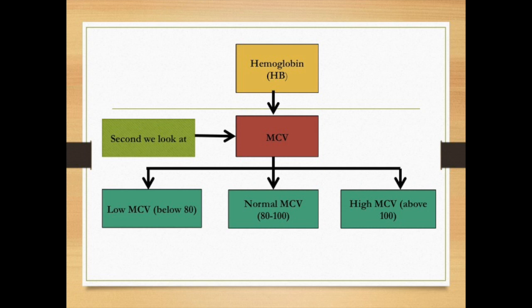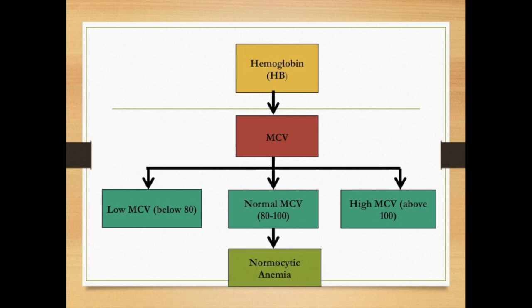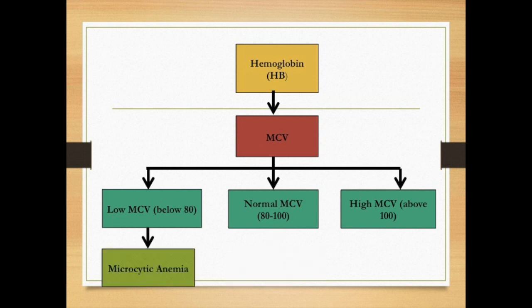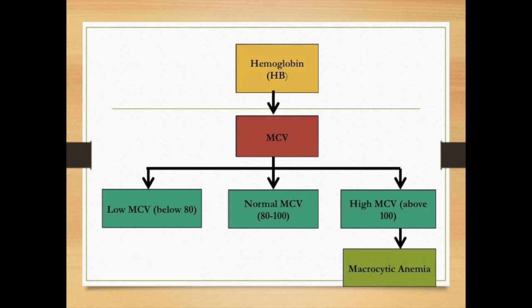The normal MCV is between 80 to 100 — we call it normocytic anemia. If MCV is below 80, we call it microcytic anemia. If MCV is above 100, we call it macrocytic anemia.